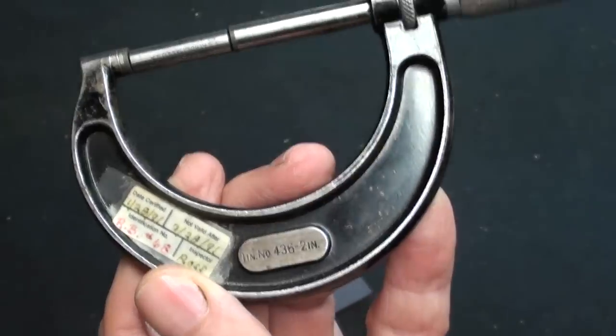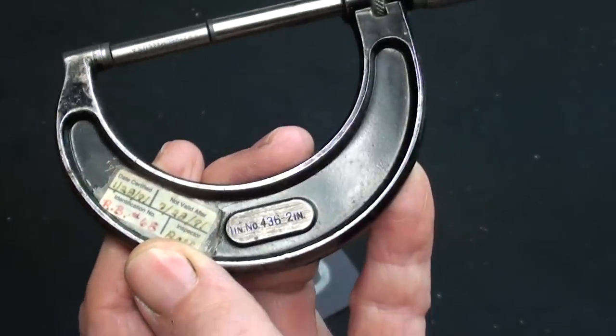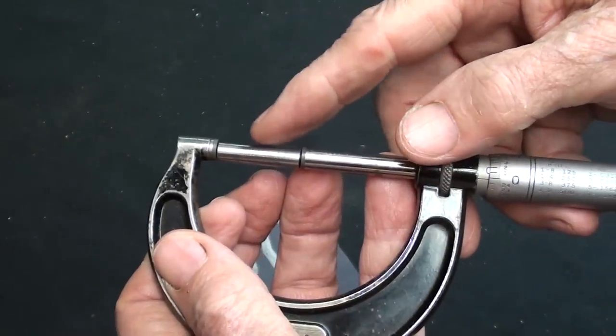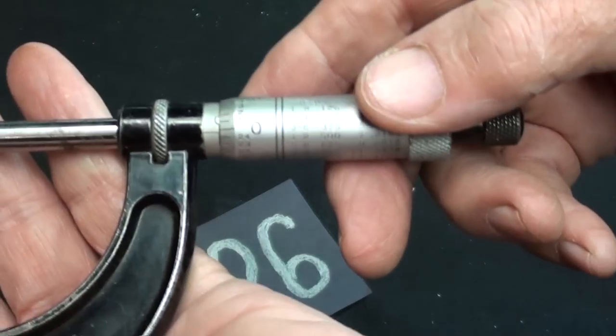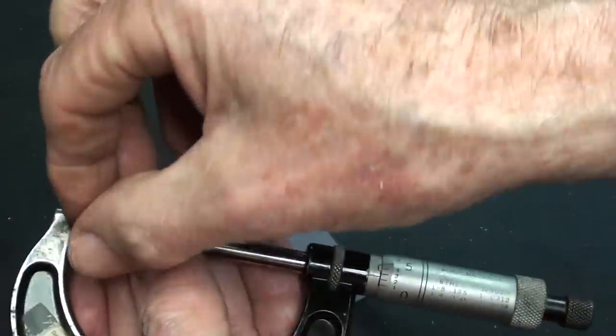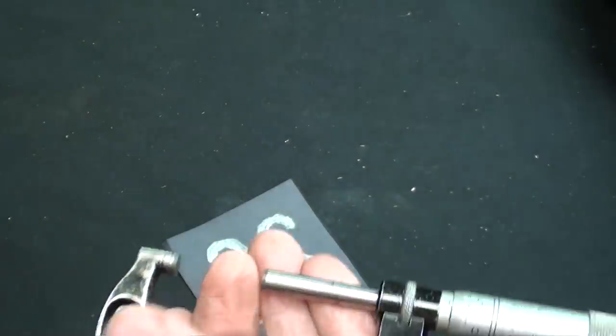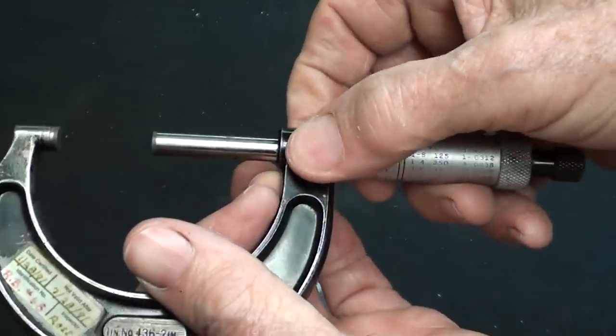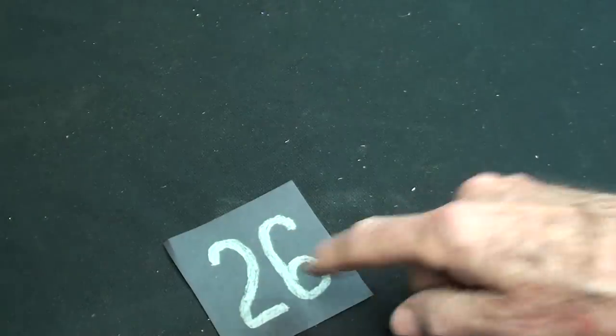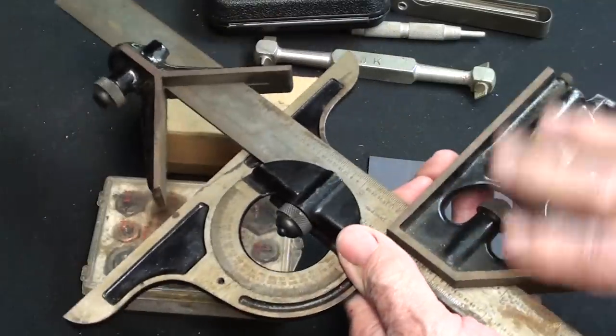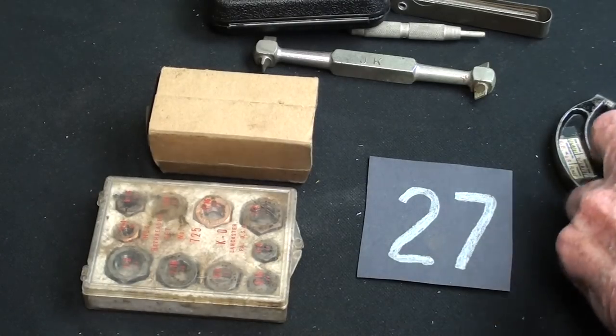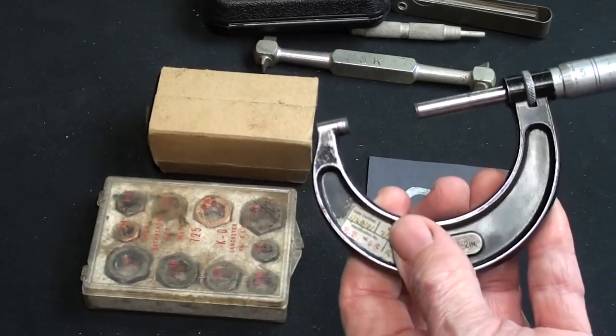26 is a Starrett 1 to 2 inch micrometer, number 436. Last calibrated in 91. Now you're not going to get this standard here. That's mine and I just put it in there to show you that it almost zeros out. I'm not going to take the time to adjust it, but you of course will. Again you do not get this. The ratchet works fine. You got the lock there. And it is a Starrett. Wouldn't that look nice in your toolbox. Number 26. This will fit in a small box.